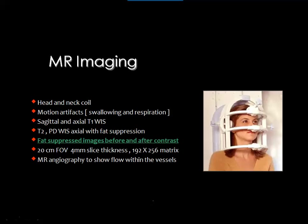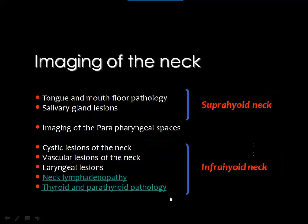For MR imaging, we use a dedicated surface coil and follow a protocol including T1 and T2-weighted images in coronal and sagittal planes. When injecting contrast media, fat-suppressed images before and after injection are important. We may also use MR angiography to show flow within vessels.